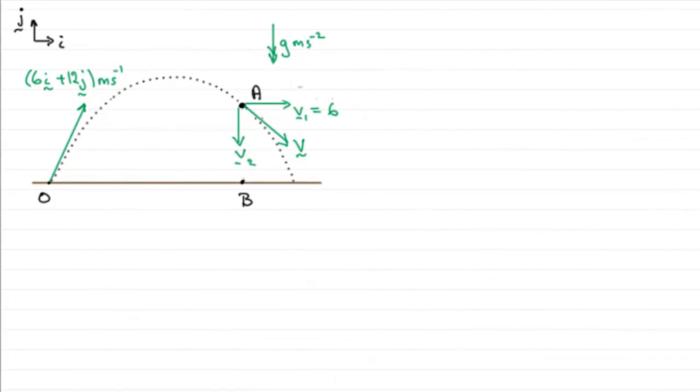And this last part, we've got to find another point C on the path where the speed of the ball is also six meters per second. We've got to find the time taken for the ball to travel from O to this particular point C.